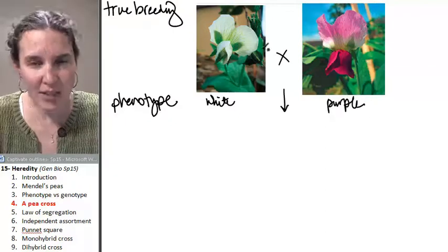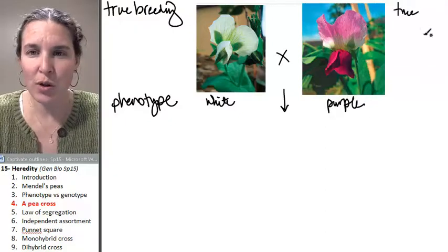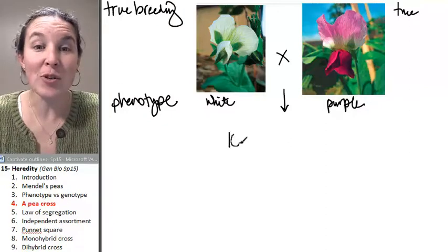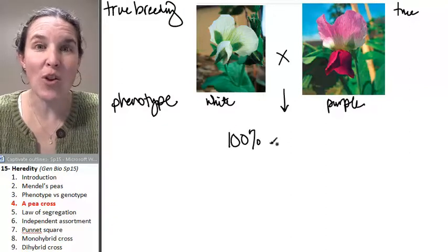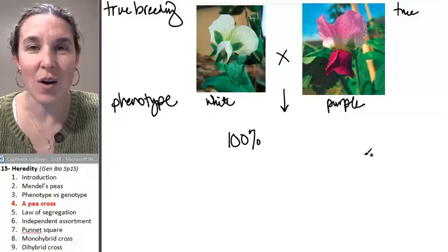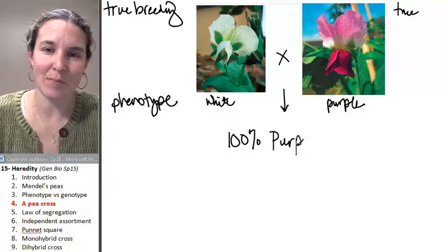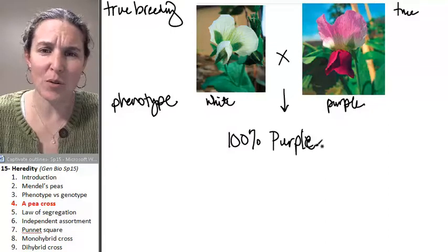And when he crossed these true breeders, 100% of his babies, with no exceptions, were what color do you want to guess? Purple, because purple is cooler than white. Perfect.